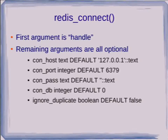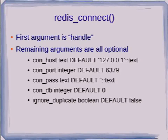The first argument to Redis Connect is a handle — an arbitrary integer you choose, which needs to be between 0 and 15, simply an index into an array. All remaining arguments are optional and default to something. Normally, if you're running on localhost with Redis database 0 — Redis databases are also named 0 through 15 — you can simply give it the handle name you want and use the defaults. The ignore_duplicate flag means if we've already created a handle with this number, don't object, just return.